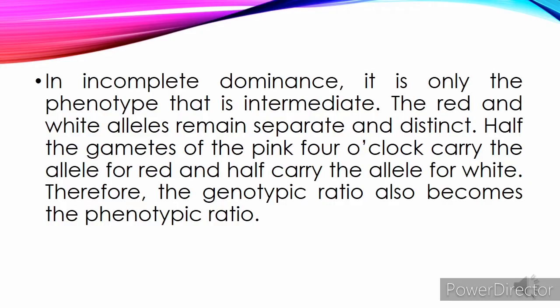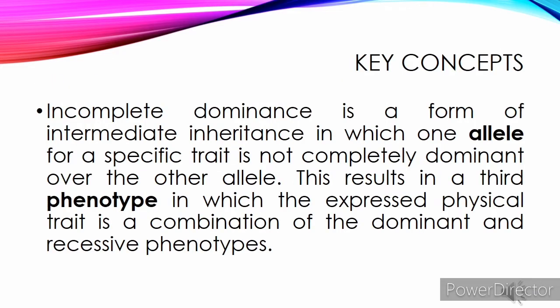In incomplete dominance, it is only the phenotype that is intermediate. The red and white alleles remain separate and distinct. Half the gametes of the pink 4 o'clock carry the allele for red and half carry the allele for white. Therefore, the genotypic ratio also becomes the phenotypic ratio. Key concept: Incomplete dominance is a form of intermediate inheritance in which one allele for a specific trait is not completely dominant over the other allele, resulting in a third phenotype that is a combination of the dominant and recessive phenotypes.